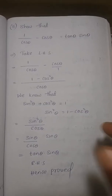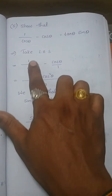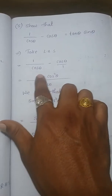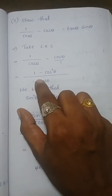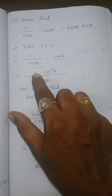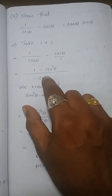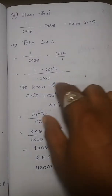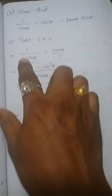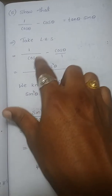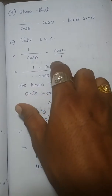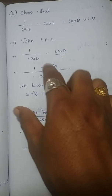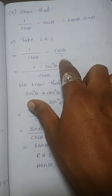Let's go through it once more. Take the left hand side: 1/cosθ − cosθ. Take the LCM, which is cosθ, and cross multiply: 1 × 1 is 1, minus cosθ × cosθ is cos²θ, and in the denominator cosθ × 1 is cosθ.